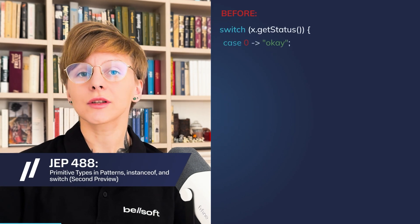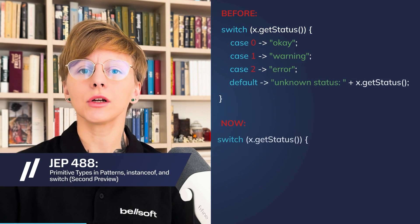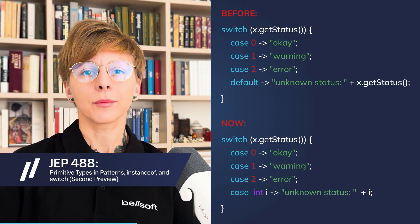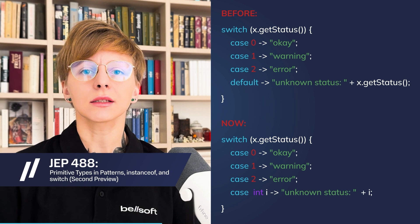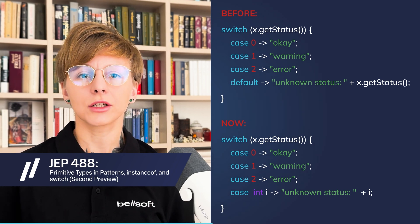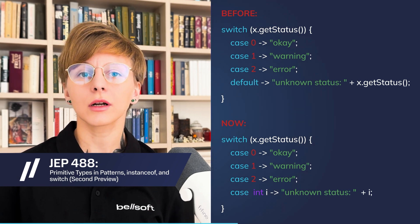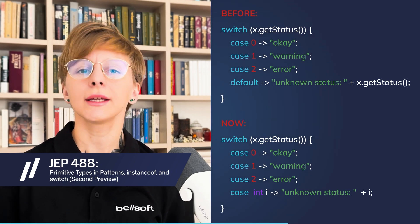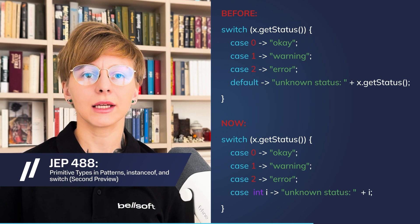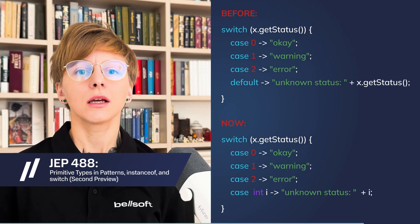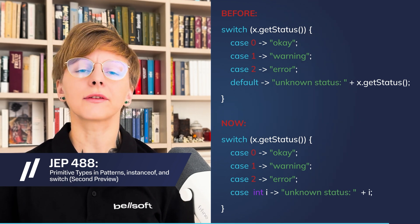JEP 488 introduces a second preview of primitive types in patterns, instanceof, and switch. This feature enables more uniform data exploration and eliminates the risks of data loss due to unsafe casts.